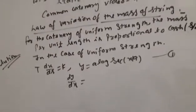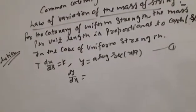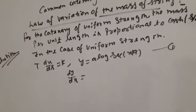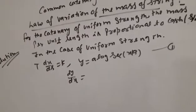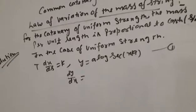In the case of uniform strength, T·ds/dx is equal to A. And y is equal to a·log(sec(x/a)), which is the equation derived in the past video.